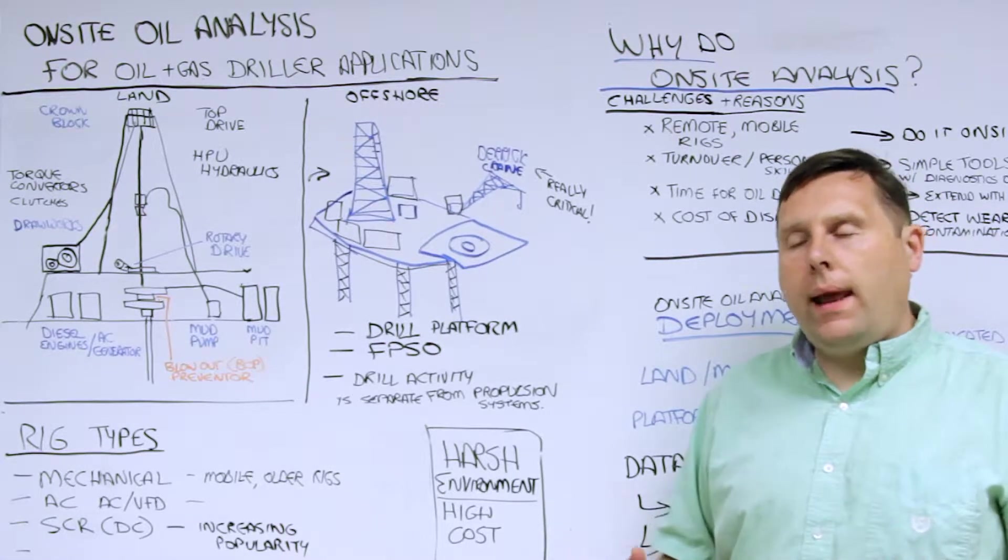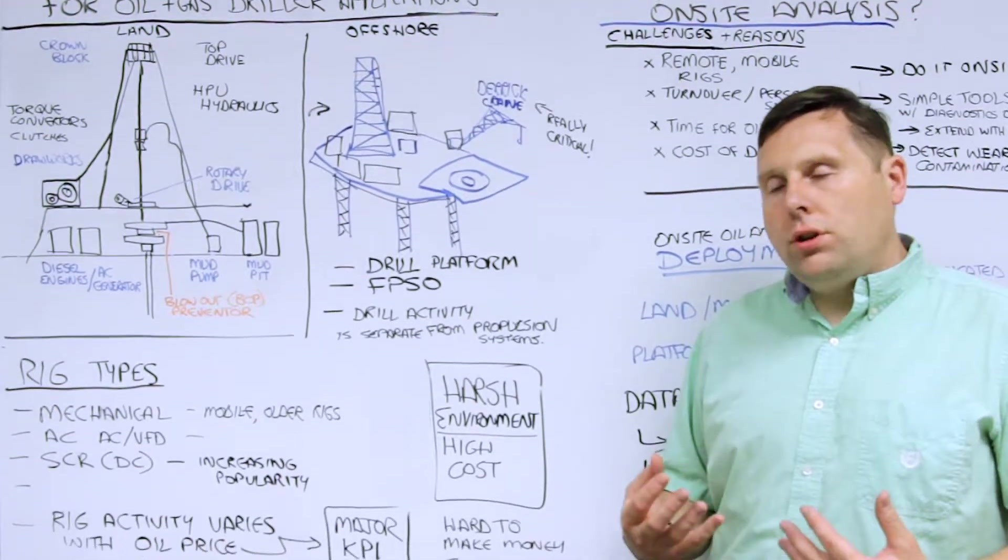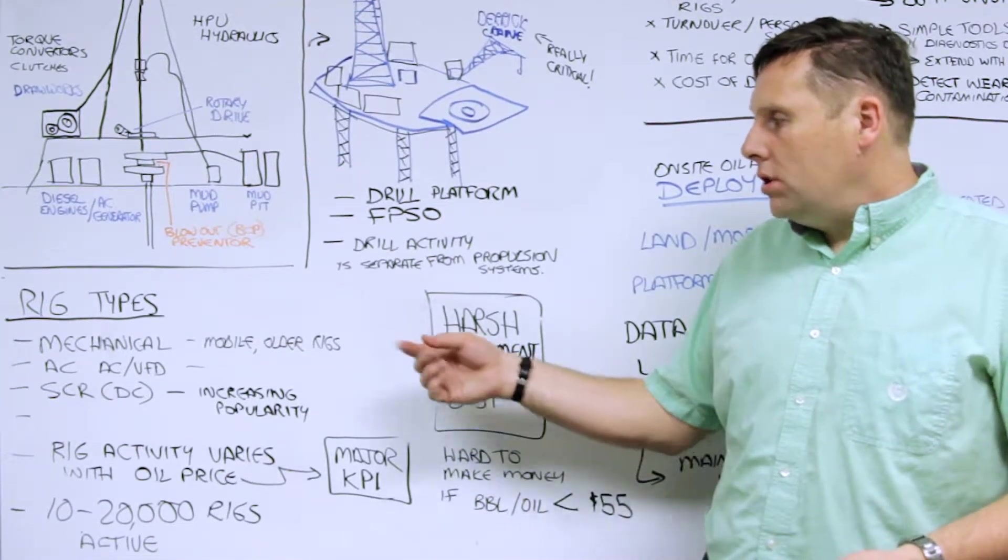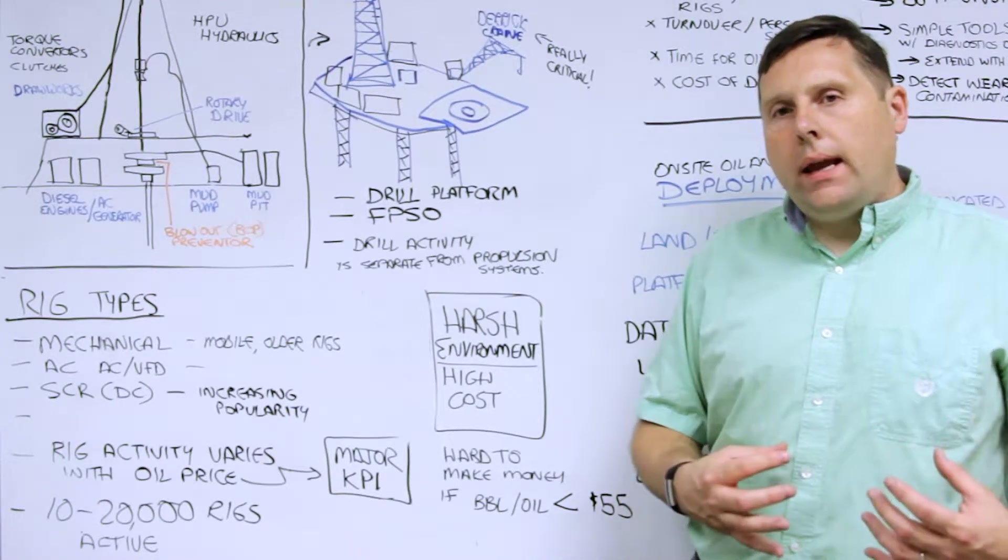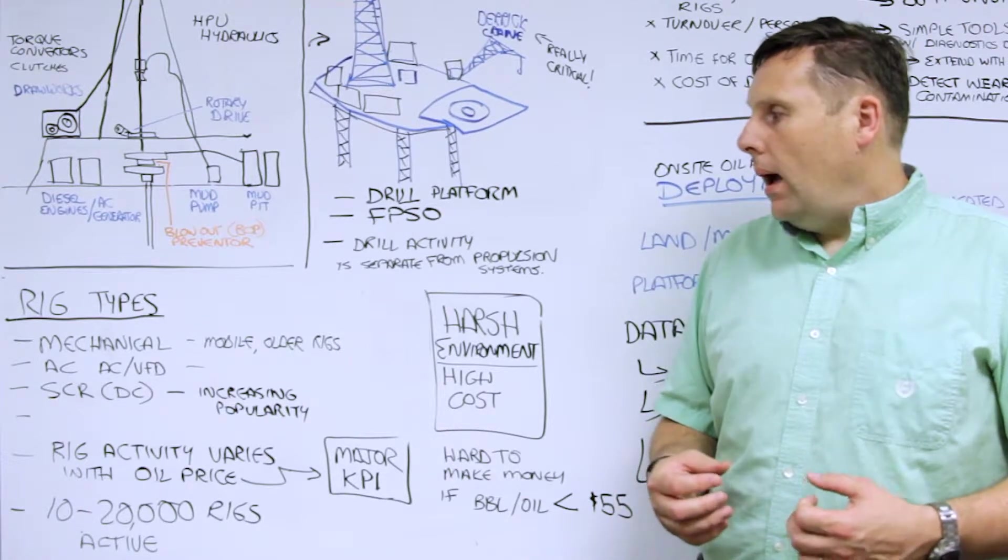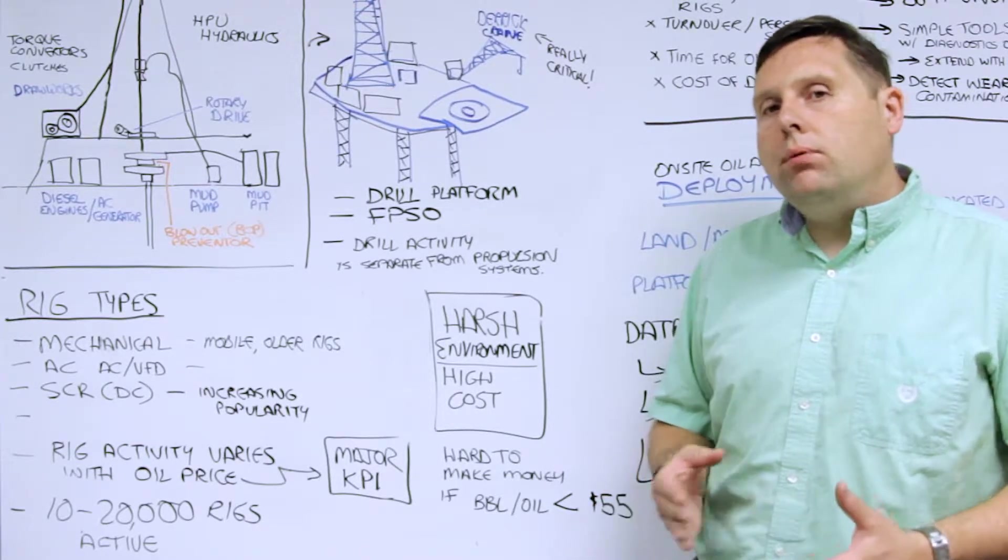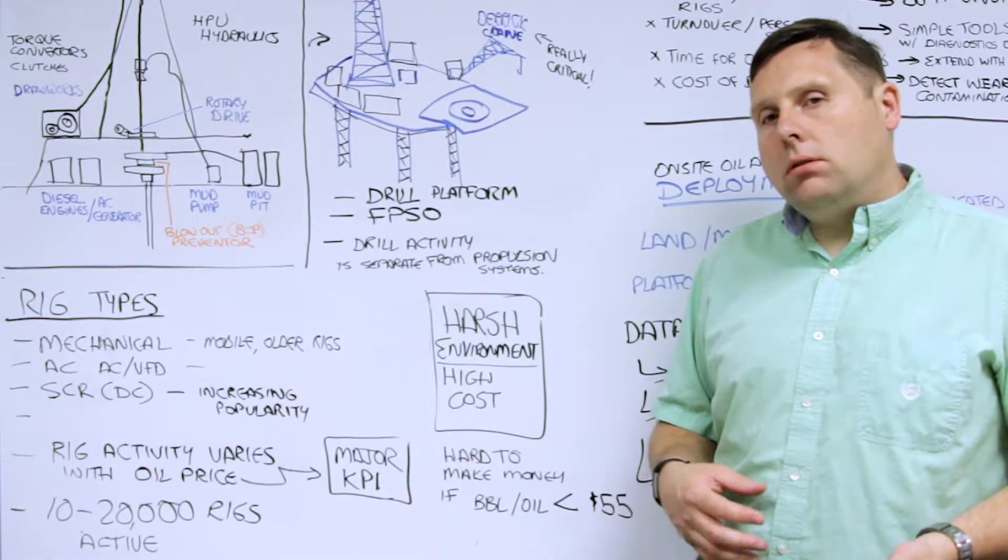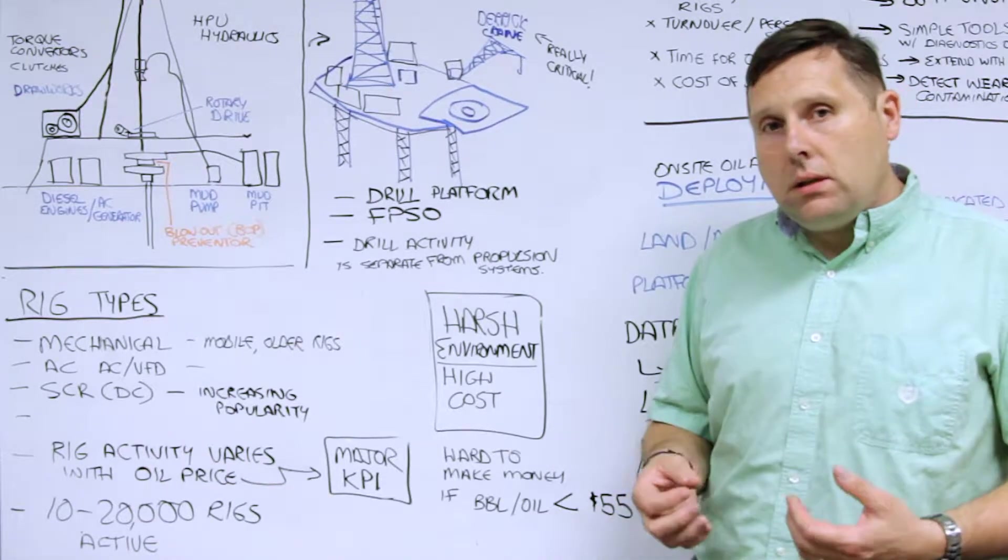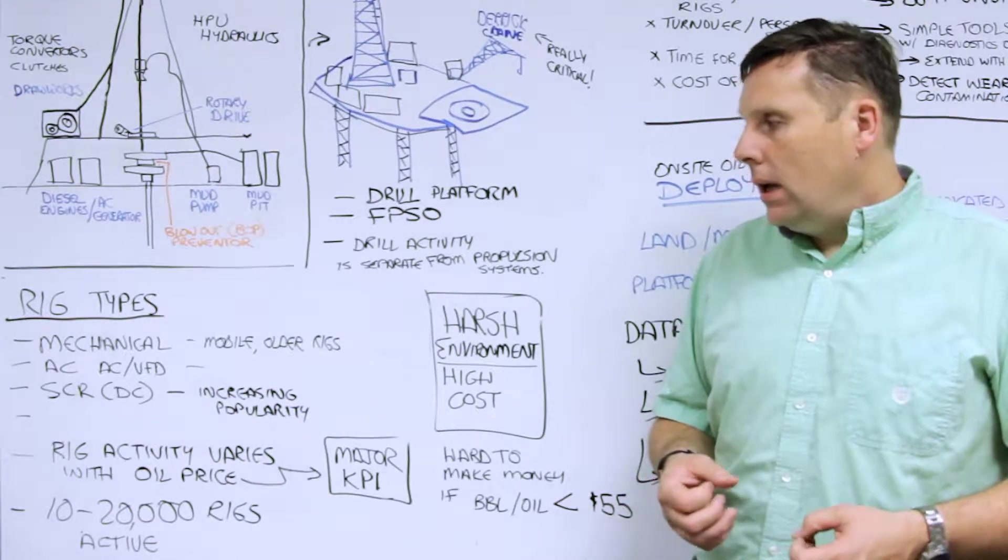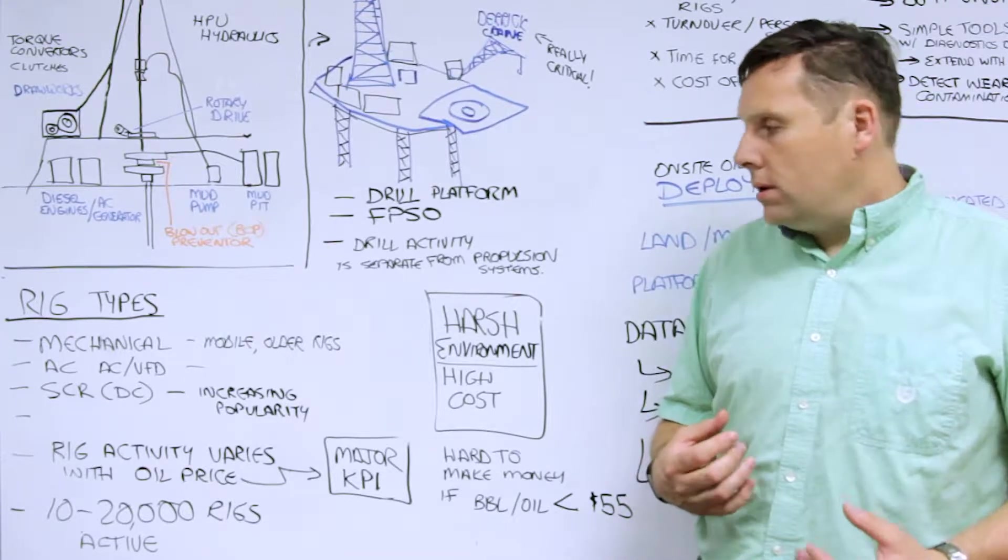There are different types of rigs out there. The older systems that used to be seen on mobile systems are mechanical systems with direct drive from the engine to the drill system. Newer systems nowadays are electrically driven with AC variable frequency drive systems which allow very precise control. You also have SCR silicon control rectifier or DC systems. They're very popular because they're extremely precise and easy to control, but almost all of these systems share some of the major equipment we described earlier.